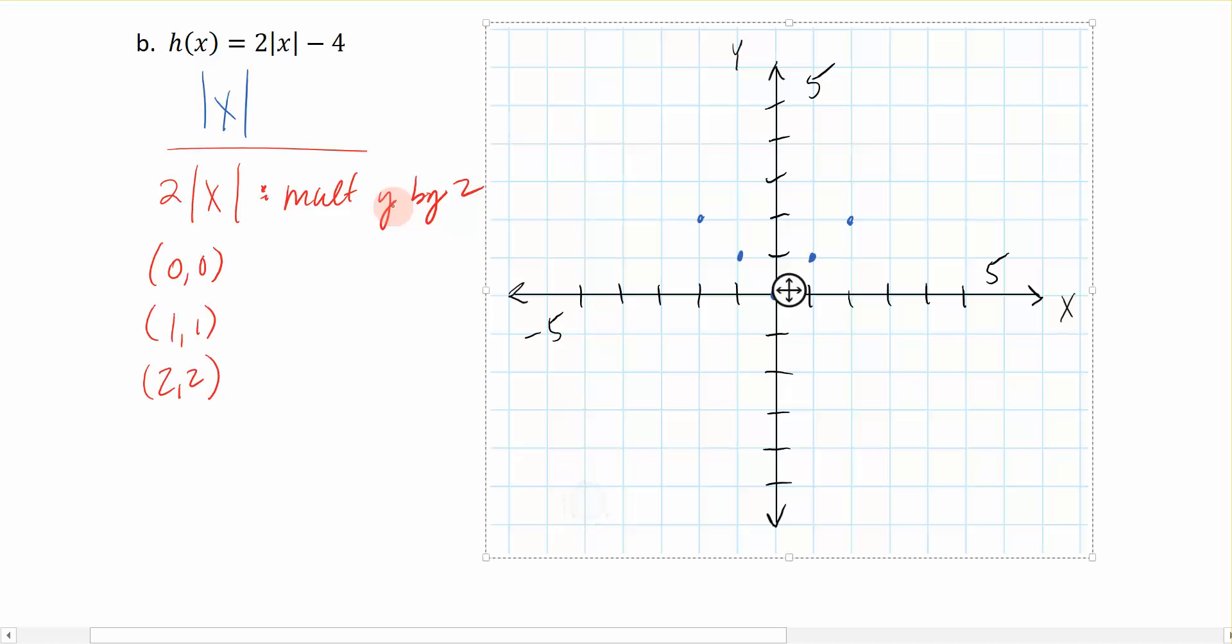So if I multiply the y coordinate of each of these points by the number 2, I would end up with a new ordered pair of 0, 0, 1, 2, because I'm multiplying the y value by 2, and 2, 4.